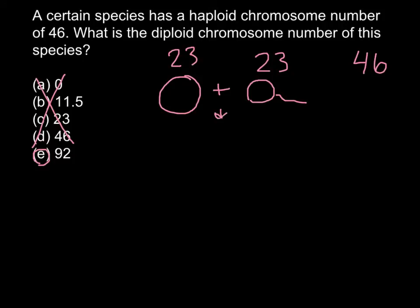So we have here also 23 chromosomes. And when these two cells join, they would produce a zygote, whose chromosome number would be once again 46.